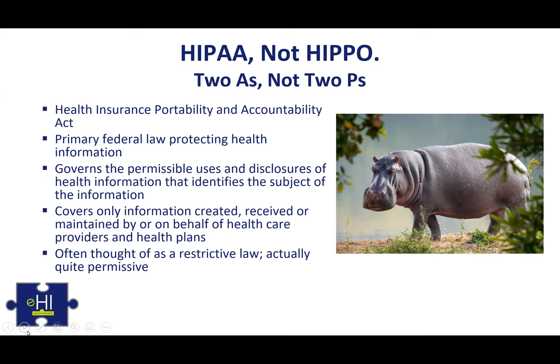There's a complex overlapping Venn diagram of laws, but really where the action is is HIPAA. It governs the permissible uses and disclosures of health information — 'disclosure' meaning the sharing with, telling of, or disseminating to others. Importantly, it only covers health information that identifies the subject, so aggregated data stripped of identifiers is not a HIPAA-covered dataset. It also covers only information created, received, or maintained by or on behalf of healthcare providers and health plans.